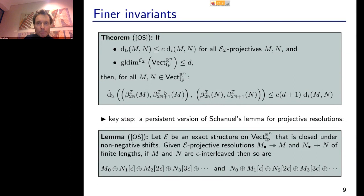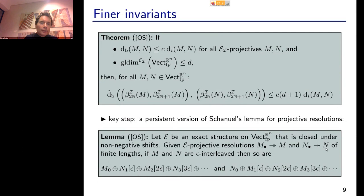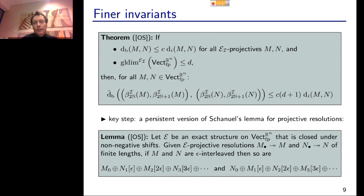Here's a meta-theorem that Luis and I came up with. Choose a collection of intervals curly-I that contains the upsets of single points, so your relative projectives include the usual projectives. Assume two things: first, that you have a bottleneck stability result for the modules supported on intervals in your collection; second, that you can bound the global dimension of your module category under this exact structure. Then you can immediately derive a stability result in the signed bottleneck distance for the multigraded Betti numbers relative to this collection.